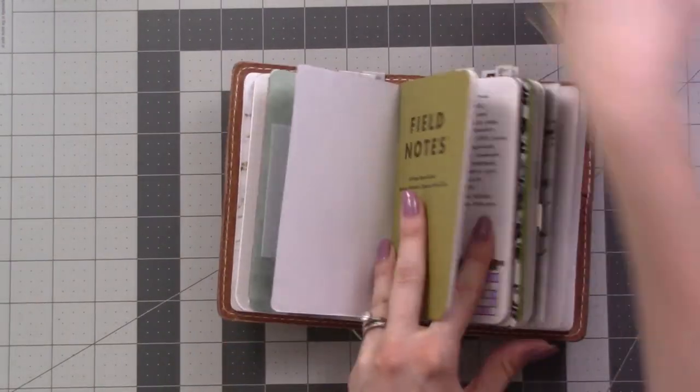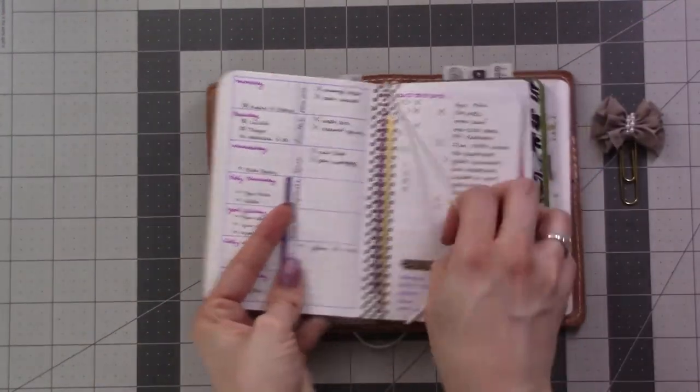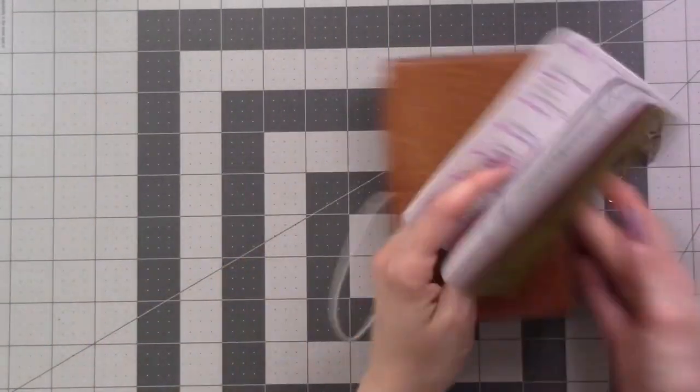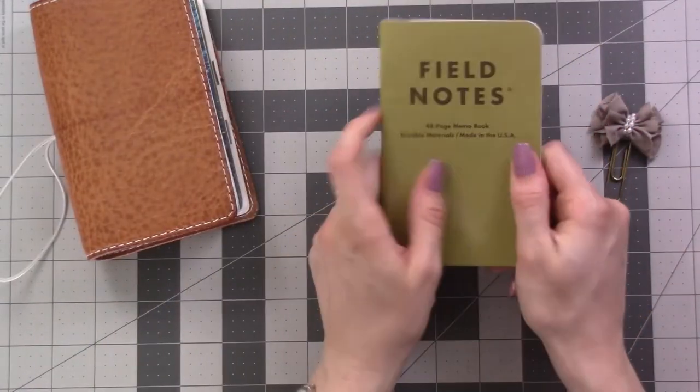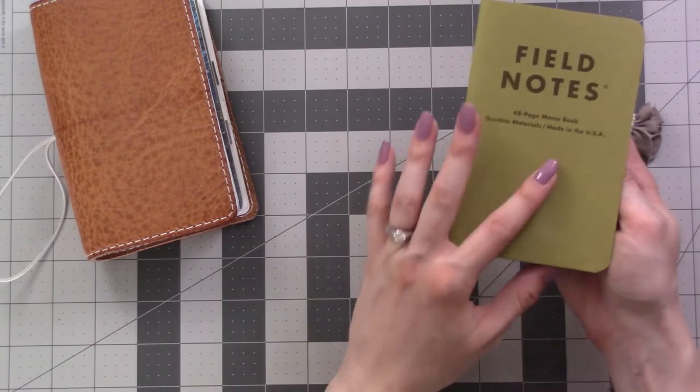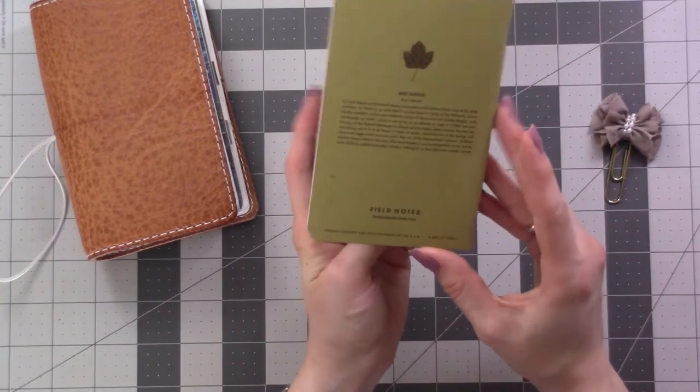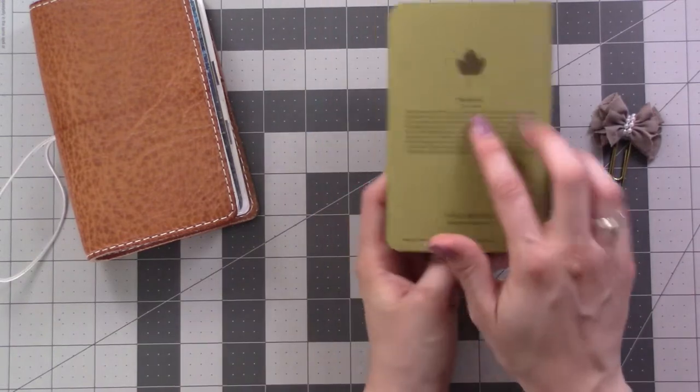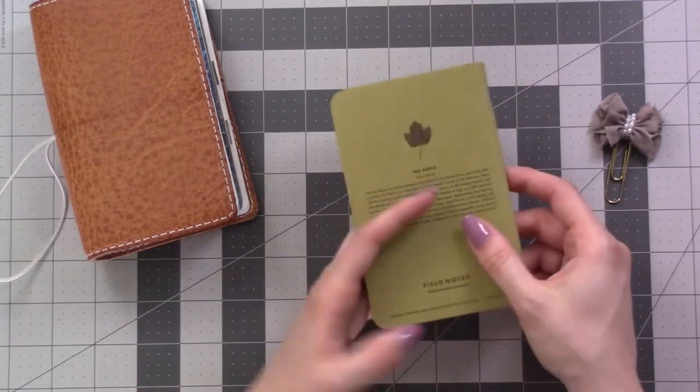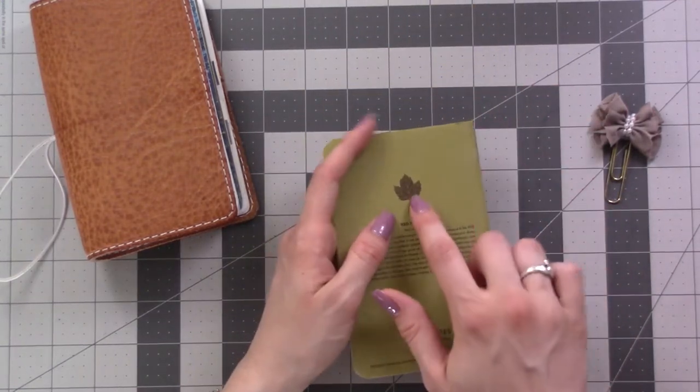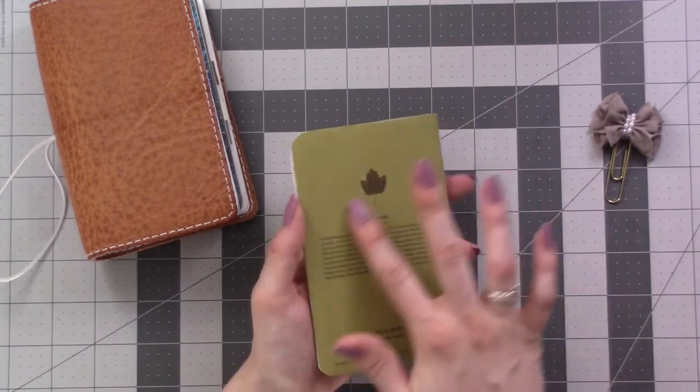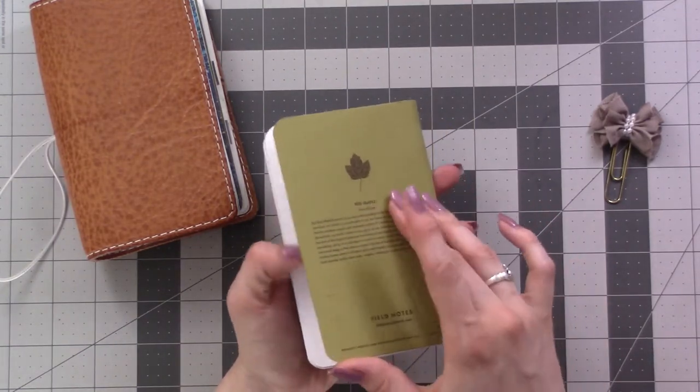This is the Field Notes that I had my daily planning in. I think it's called the Shenandoah collection. Each of these notebooks has a different tree. This one says red maple, so it's got the green summer color of the leaves on the outside.